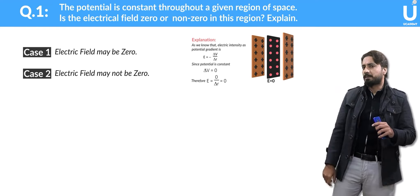Here we have an electroscope machine. You can see a container with a vacuum inside. There is a metal plate on the top, a rod connected to the plate, and the rod has two small leaves at the bottom. This is called a gold leaf electroscope.